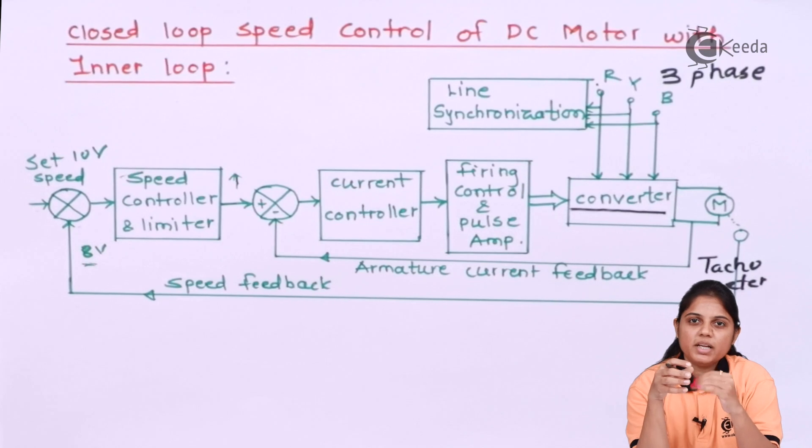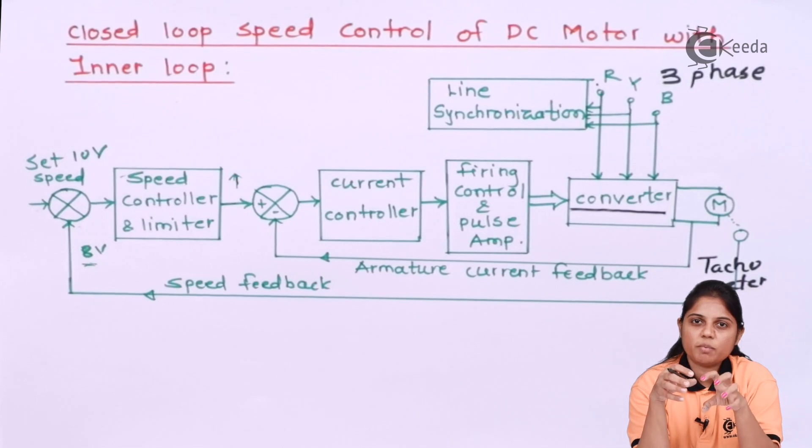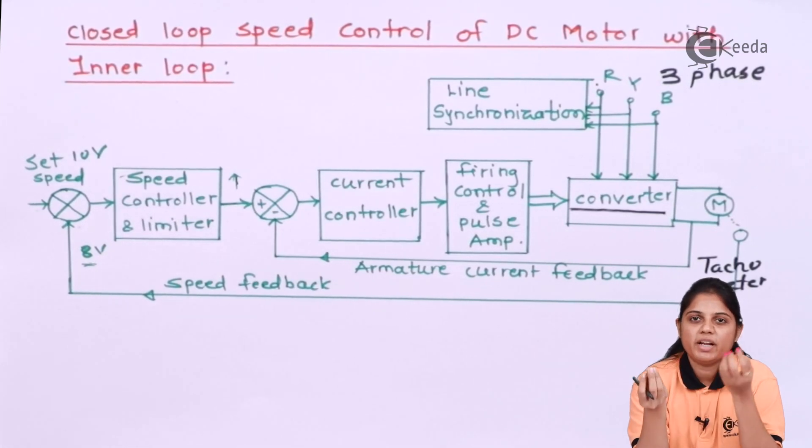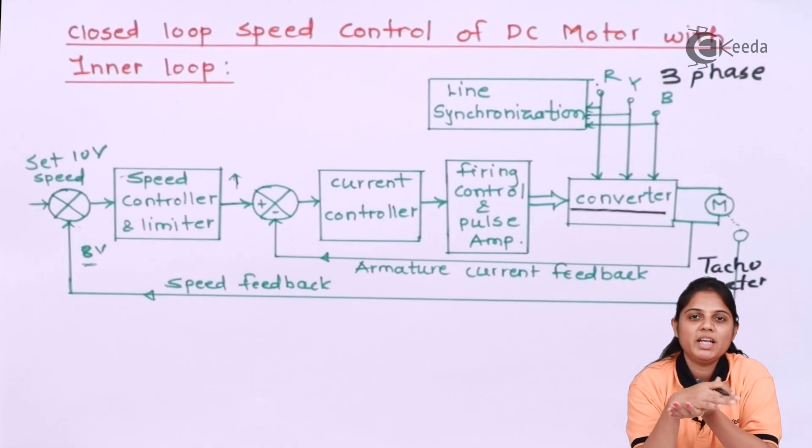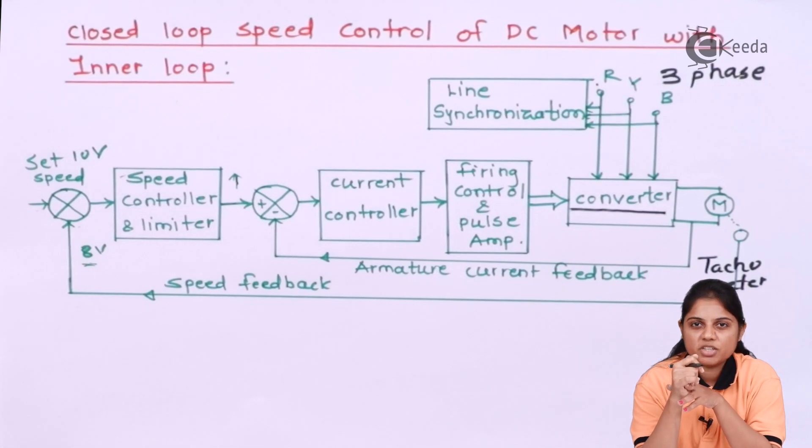But at that particular time, it is fed back as 8 volts. That means now whatever action will be taken, that will be an error because you are working on 10 volts, you are working on a 10 volt speed. That means it is generating 10 volts. But if it is telling you to increase the speed, your speed will be increased beyond the 10 volts and that will be dangerous.